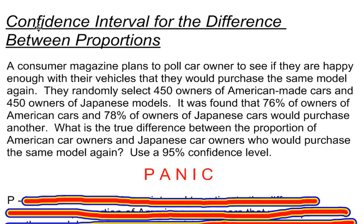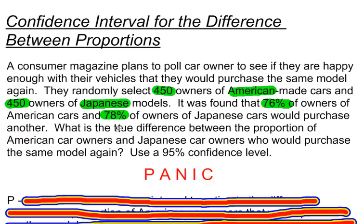Here's an example of finding a confidence interval for the difference between proportions. A consumer magazine plans to poll car owners to see if they are happy enough with their vehicles that they would purchase the same model again. They randomly select 450 owners of American-made cars and 450 owners of Japanese models. It was found that 76% of the owners of American cars and 78% of owners of Japanese cars would purchase another. What is the true difference between the proportion of American car owners and Japanese car owners who would purchase the same model again? I want to use a 95% confidence level.